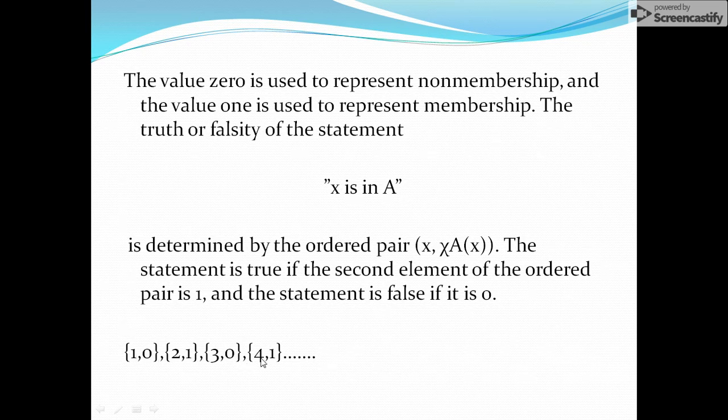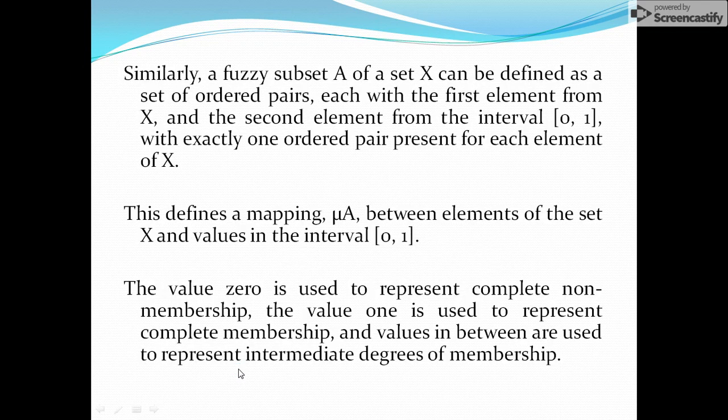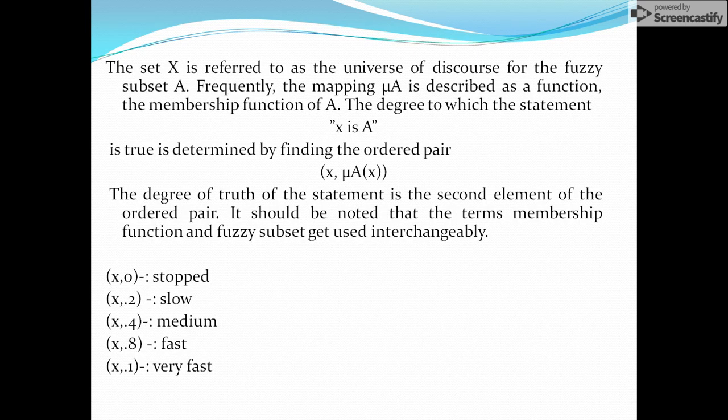So we will represent that like this: (1, 0), (2, 1), (3, 0), (4, 1). So 0 and 1 are two specific values. But what about fuzzy sets? As we have discussed that fuzzy normally do not mean 0 and 1. There will be some intermediate values. And that intermediate values will represent some intermediate degrees of membership. We will have 1 for complete membership. We will have 0 for complete non-membership. And we will have some intermediate values for intermediate degree of membership that will represent how closely it is related to the complete acceptance or complete non-acceptance.